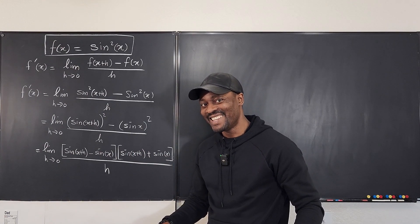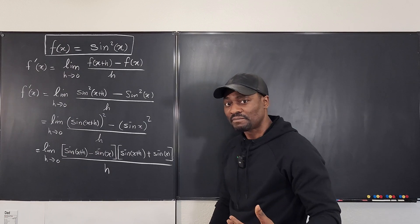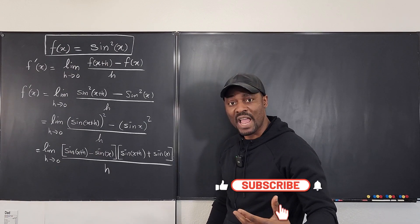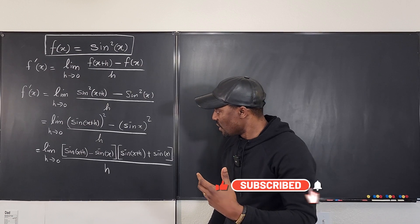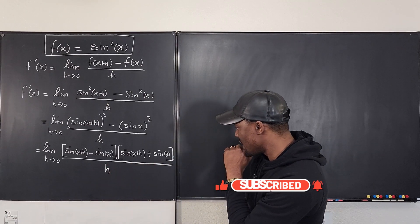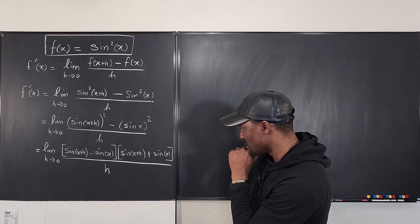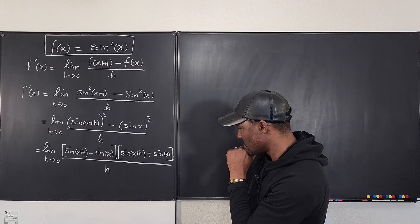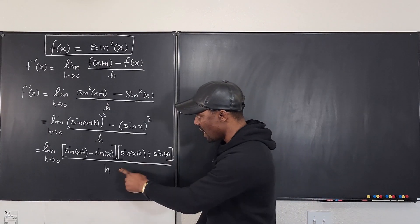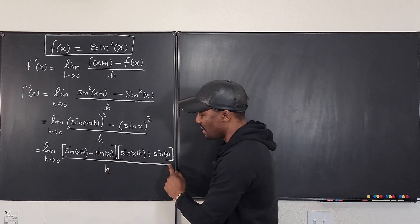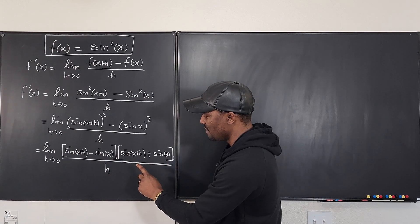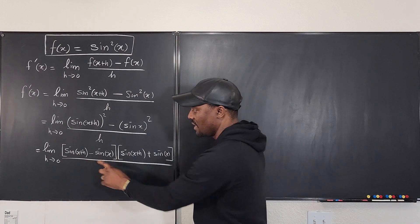Remember that when you do things like this, what you're actually doing is taking the limit of a product. And this h can only go with either of them because there's no plus sign here. So I'm going to give the h to the left-hand side.